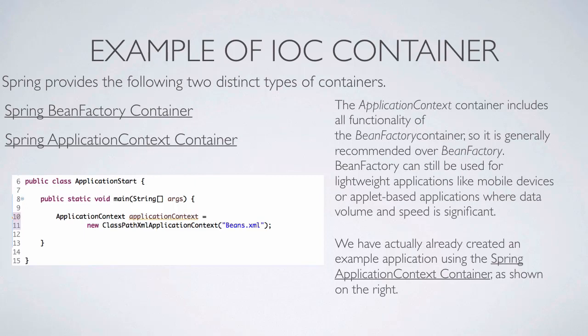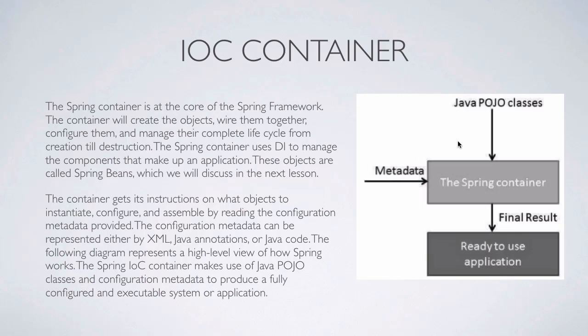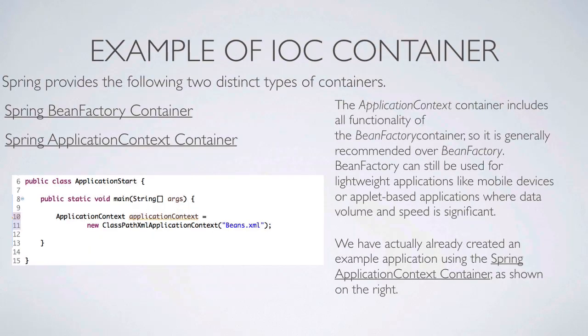The application context container includes all the functionality of the bean factory container, so it is generally recommended over the bean factory. The bean factory can still be used for lightweight applications like mobile devices or applet-based applications where data volume and speed is significant. Essentially, both containers do the same thing — they read metadata and convert it into POJO class instances — they're just two different types of Spring containers.